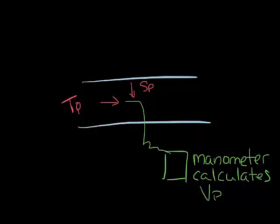Knowing the velocity pressure allows us to calculate the velocity in the ductwork. The equation for velocity is velocity equals 4005 times the square root of velocity pressure.